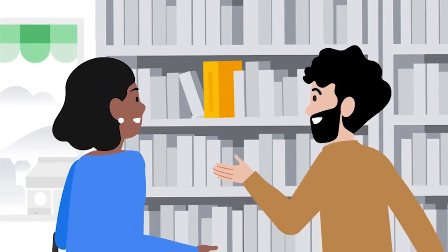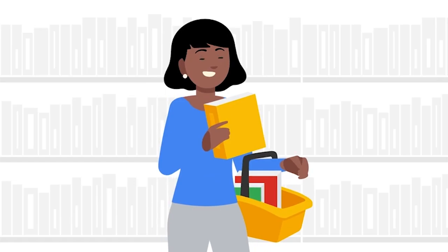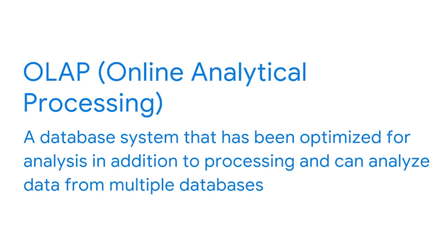An example of an OLTP database would be an online bookstore. If two people add the same book to their cart but there's only one copy, the person who completes the checkout process first will get the book, and the OLTP system ensures that there aren't more copies sold than are in stock. OLTP databases are optimized to read, write, and update single rows of data to ensure that business processes go smoothly, but they aren't necessarily designed to read many rows together.